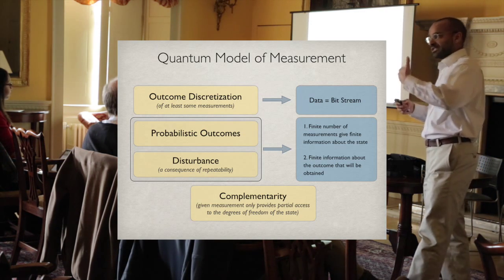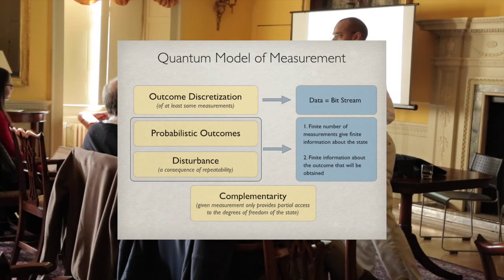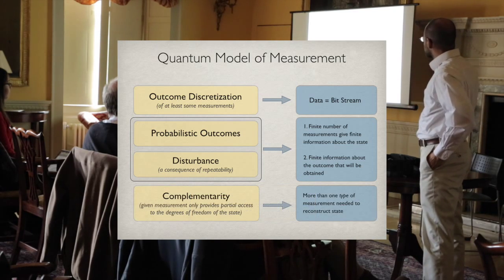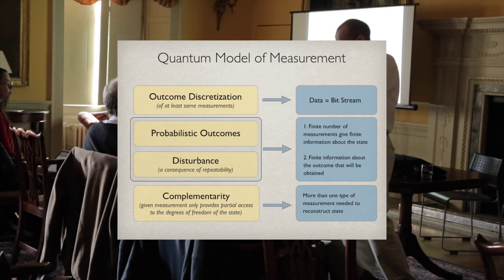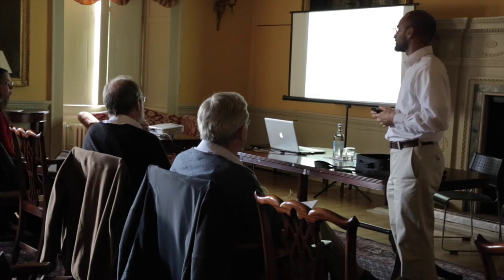Even if you know the state, you only get finite information about what outcome will later be obtained. Because of complementarity, it's not enough to do just one type of measurement on quantum systems. You have to do a number of different measurements to build up the quantum state - that's if you restrict yourself to repeatable measurements.